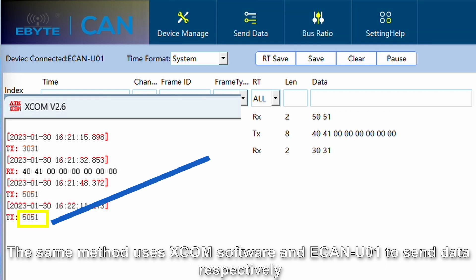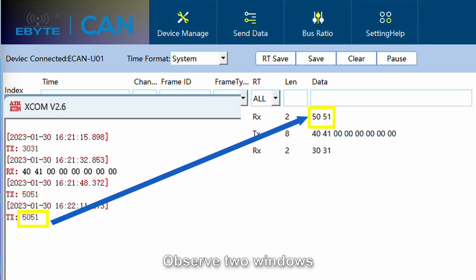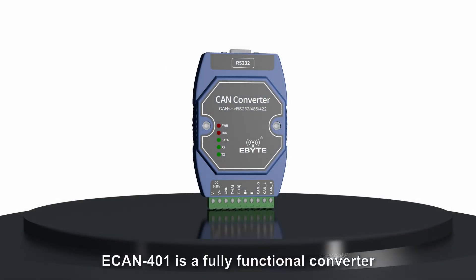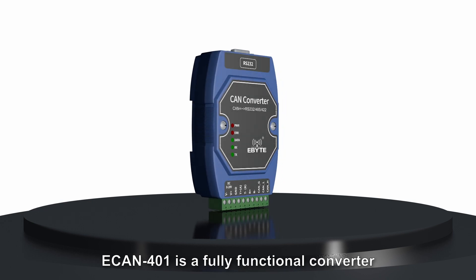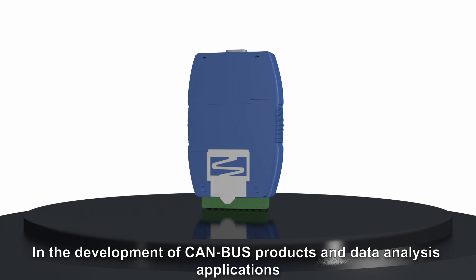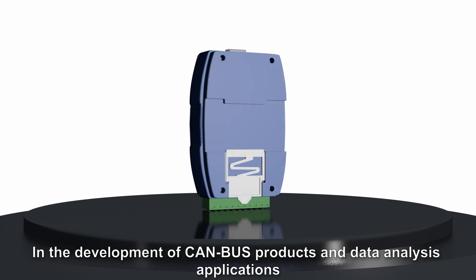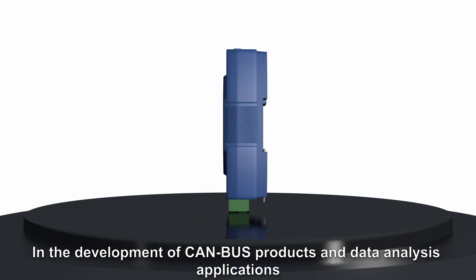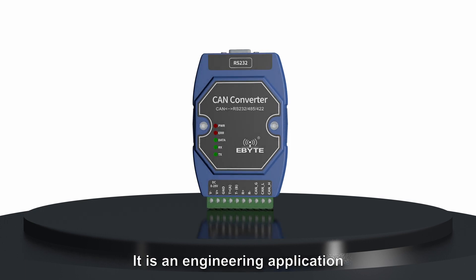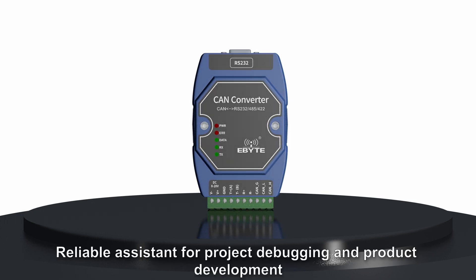Use the same method with xcom software and eCAN U01 to send data respectively and observe the two windows. Product summary: eCAN 401 is a fully functional converter with multiple conversion modes. In the development of CAN bus products and data analysis applications, it is extremely cost-effective and is a reliable assistant for project debugging and product development.